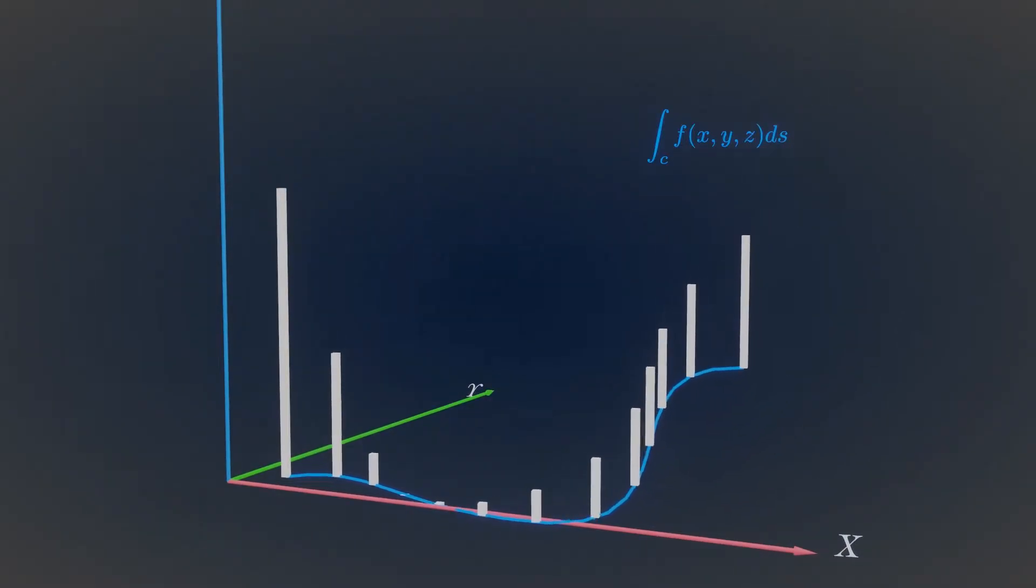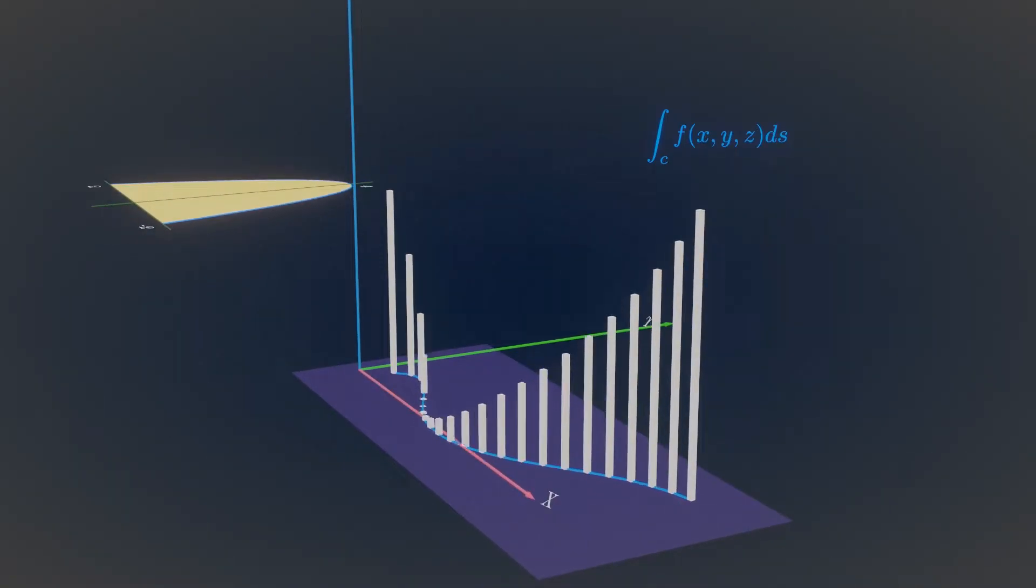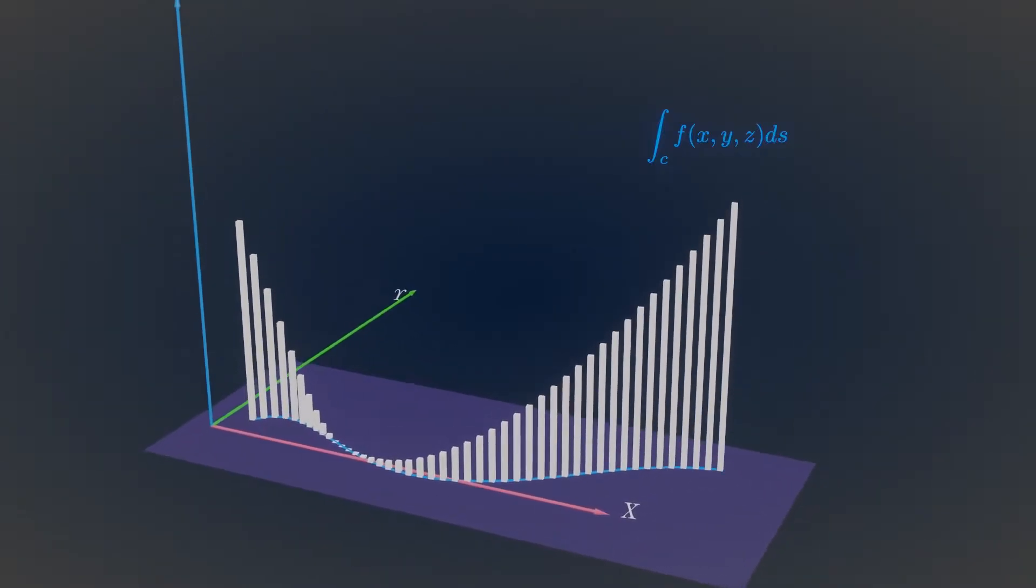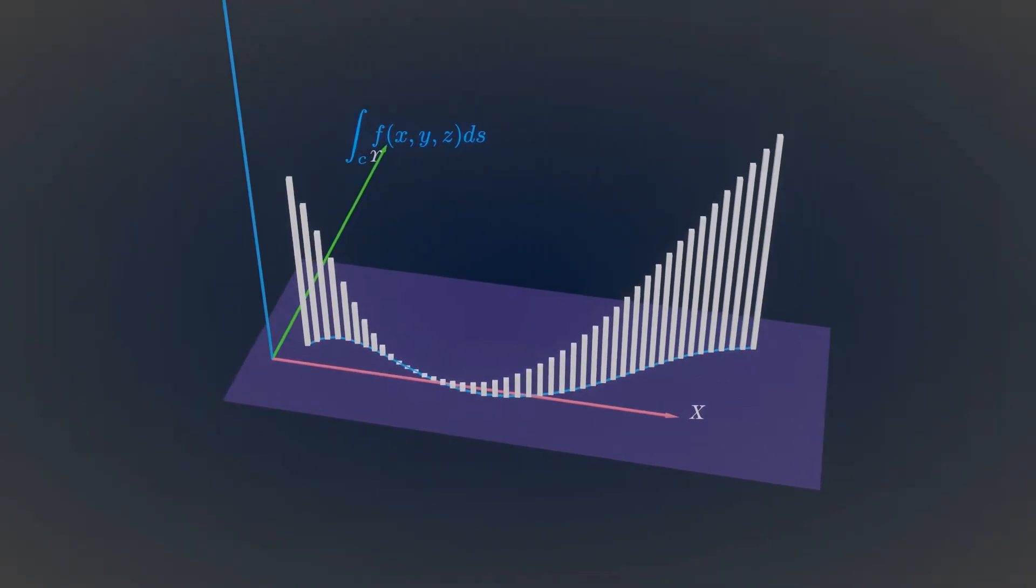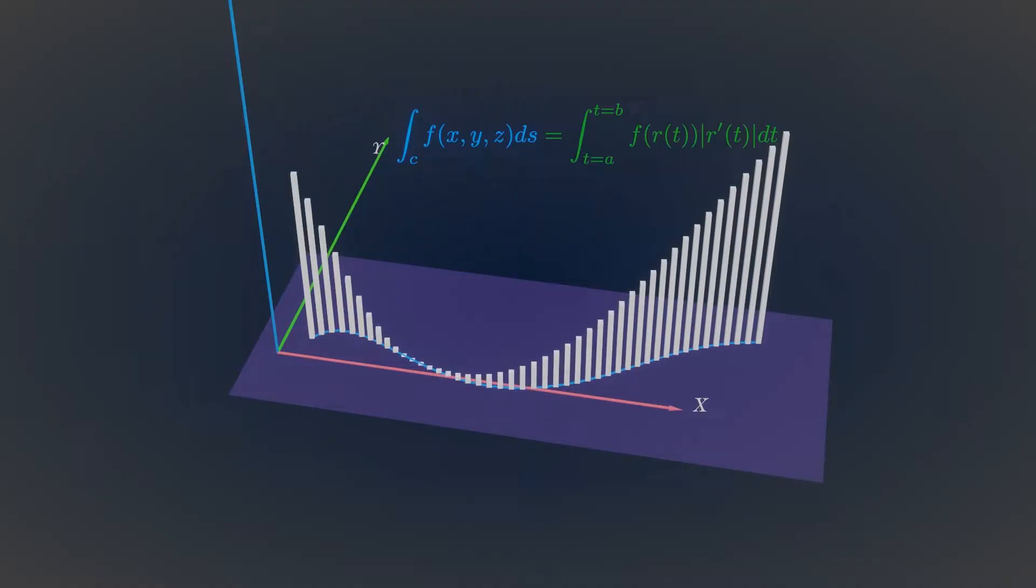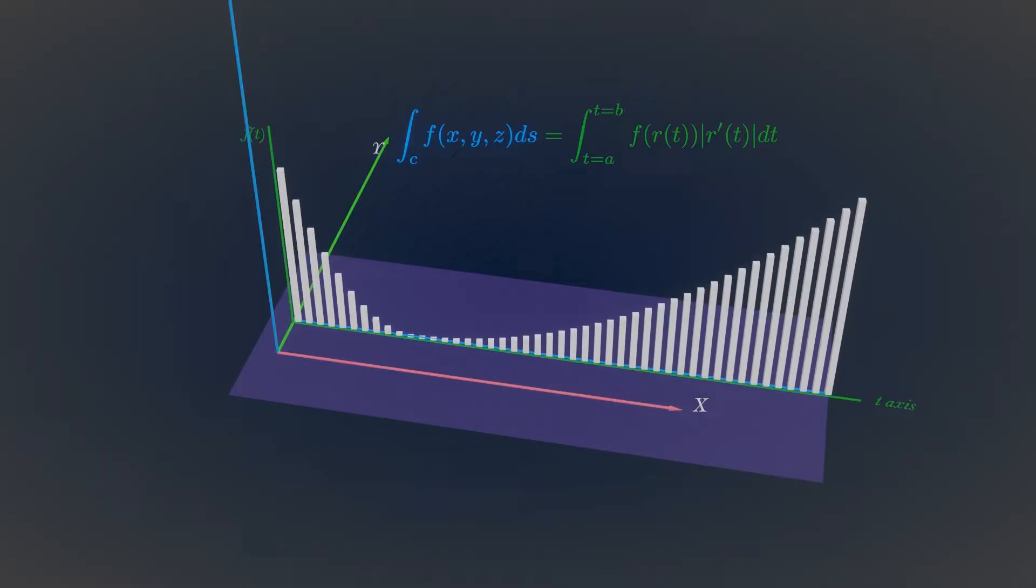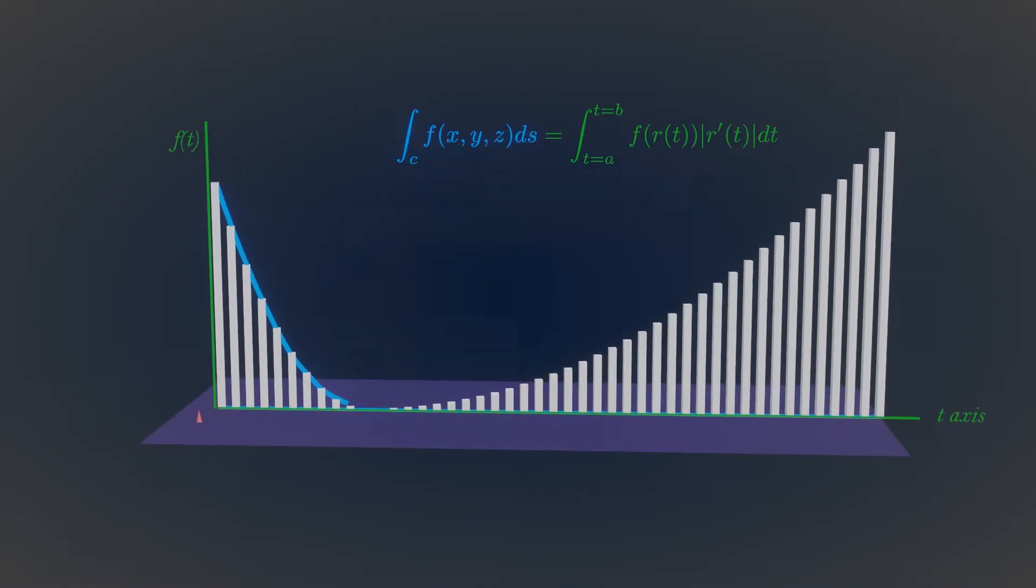If the curve lies in a x-y plane, line integral of a scalar function can give the area of a 3D surface. We can evaluate the line integral by expressing the curve C in parametric form in terms of a parameter T. Geometrically, this is equivalent to stretching the curve into a straight line on the T-axis. This reduces the line integral into a simple integral in term of variable T.